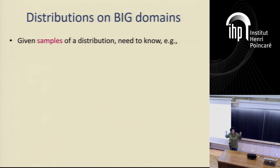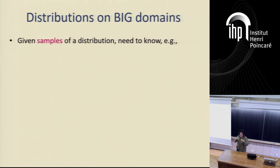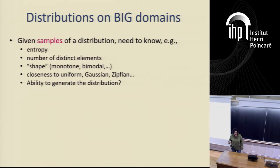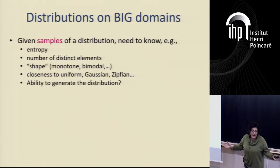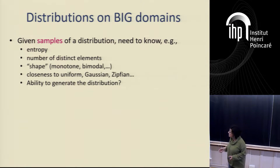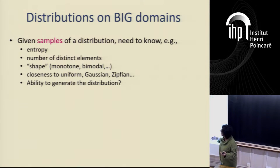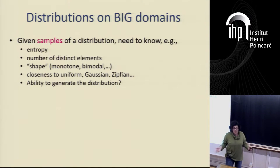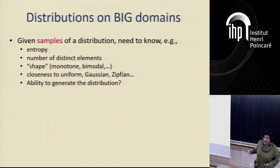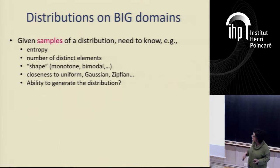So our standard notion of how to test uniformity doesn't seem to work. Here's the problem: you have a huge domain — very big — and you don't have time to see it all. You want to understand something about your entire distribution. Maybe you want to know the entropy, how many distinct elements are in the support, or something about the shape — is it uniform, bimodal, Zipfian, or Gaussian? Maybe you want to know if it's a simple-to-generate distribution.